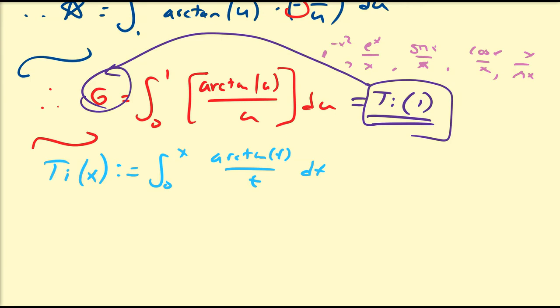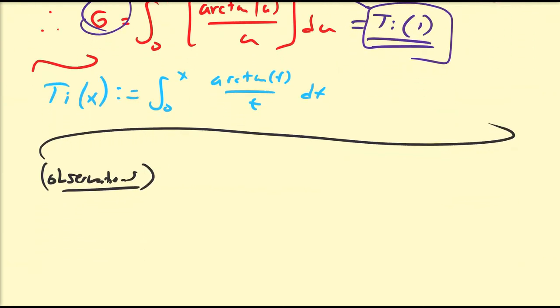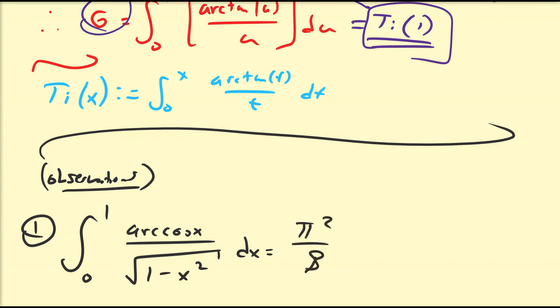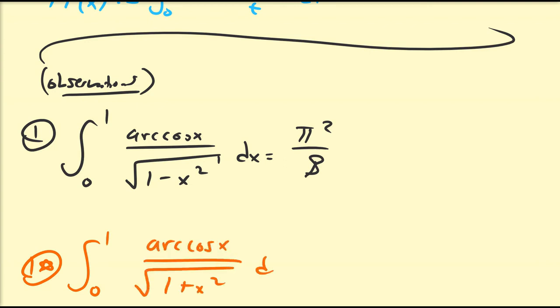Since this video is just meant to be an introduction, I want to state a few observations that show Catalan's constant has an intimate connection with trigonometric functions, exponentials, logarithms, and derivatives. As an exercise, one can prove that the integral from 0 to 1 of arccosine of x divided by the square root of 1 minus x squared dx equals pi squared divided by 8. If you slightly modify this integral, one can find that the integral from 0 to 1 of arccosine of x over the square root of 1 plus x squared is actually equal to G.